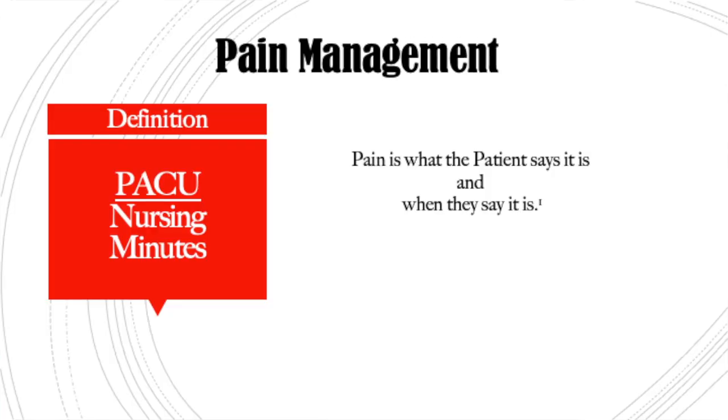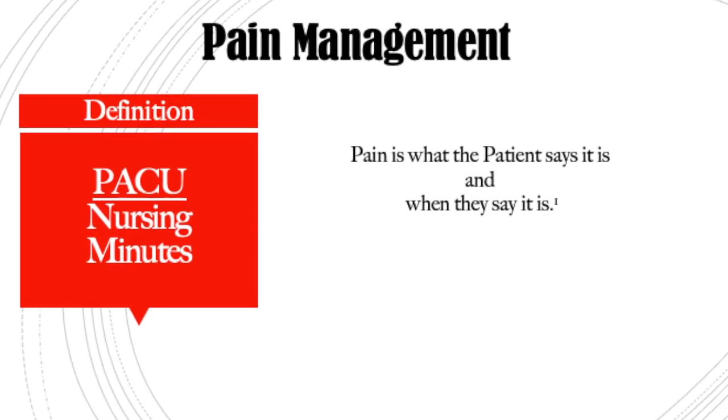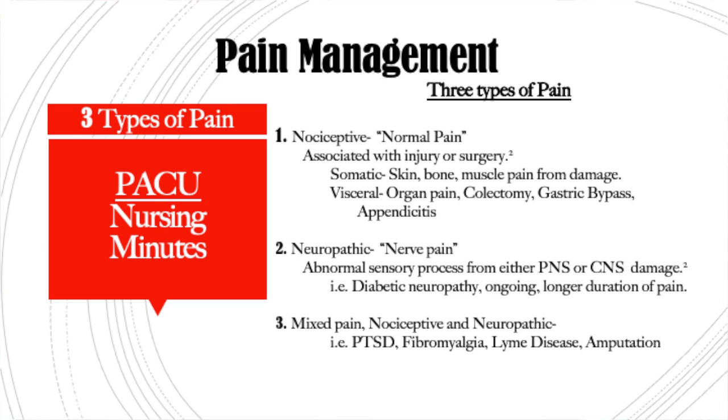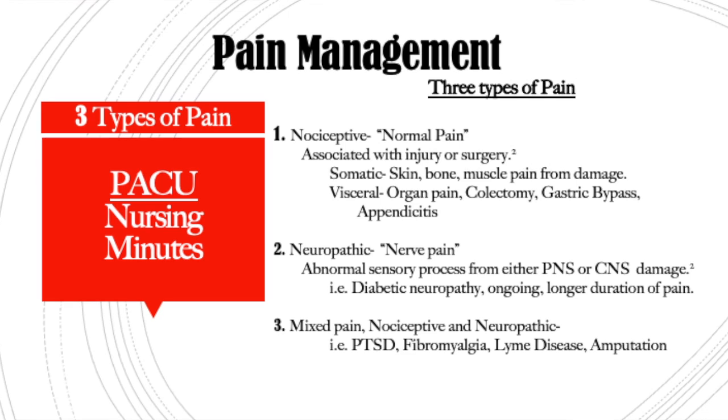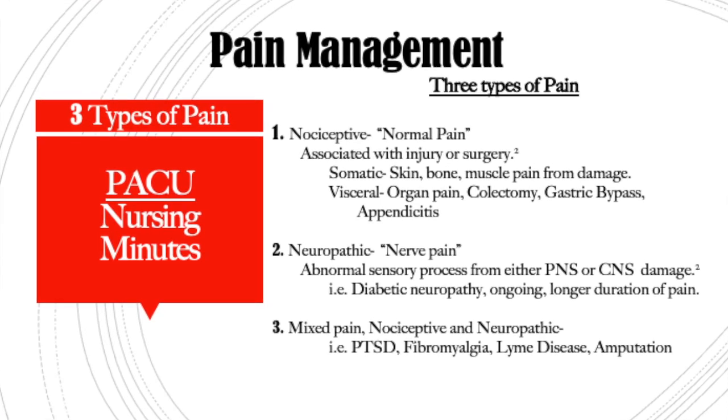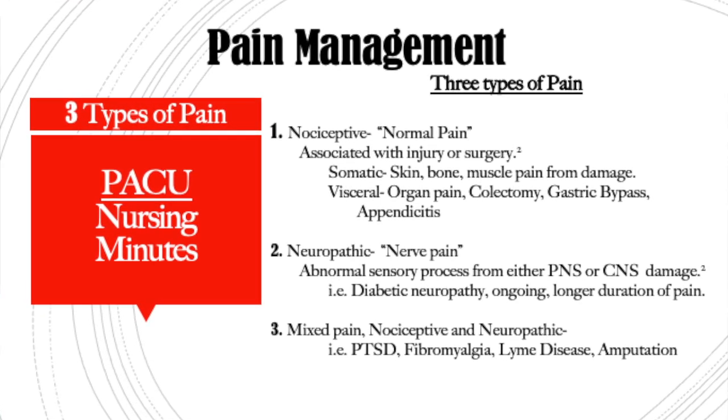What is pain? The definition of pain is what the patient says it is and when they say it is. There are three types of pain we need to understand. The first type is nociceptive pain — this is normal pain. This is when you've cut your hand while slicing cucumbers for a salad and you feel that surge, that sting or burn from the cut. That is the normal pathway your body uses to process nerve messages from the tissue damage of the injury.